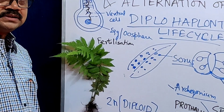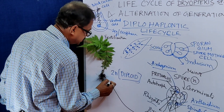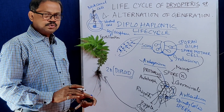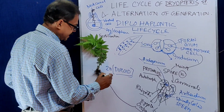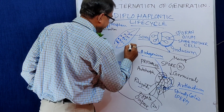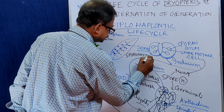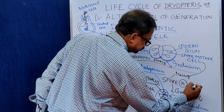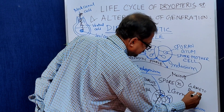The sporophyte structure starts developing again. This zygote or oosphere develops and produces a new plant, and the prothallus is slowly destroyed. In this way, the total life cycle of Dryopteris takes place. From the main plant to spore formation is the sporophytic phase, and this portion — from prothallus — is the gametophytic phase, which is haploid.